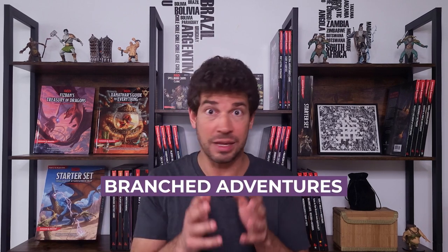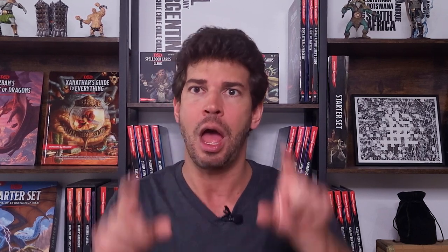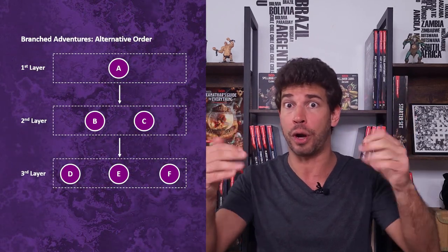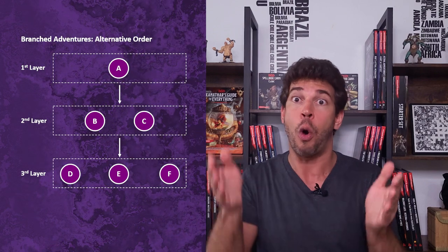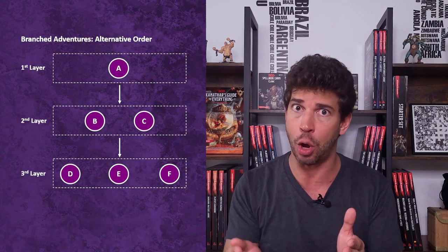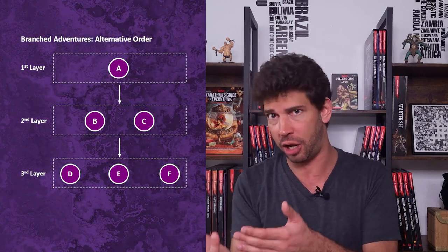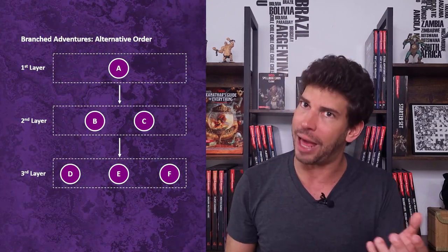Branched adventures are the middle path. In them, every encounter may unlock one or more encounters. It's really helpful to design an encounter flowchart when designing branched adventures. The simplest branched adventure offers players simply an alternative order of encounters — it helps to think of encounters in layers. A first-layer encounter unlocks two or more second-layer encounters. Players must tackle all second-layer encounters to unlock the following third-layer encounters, but they can do so in whichever order they want. They provide a bit more player freedom than linear adventures in exchange for a bit more complexity in design.